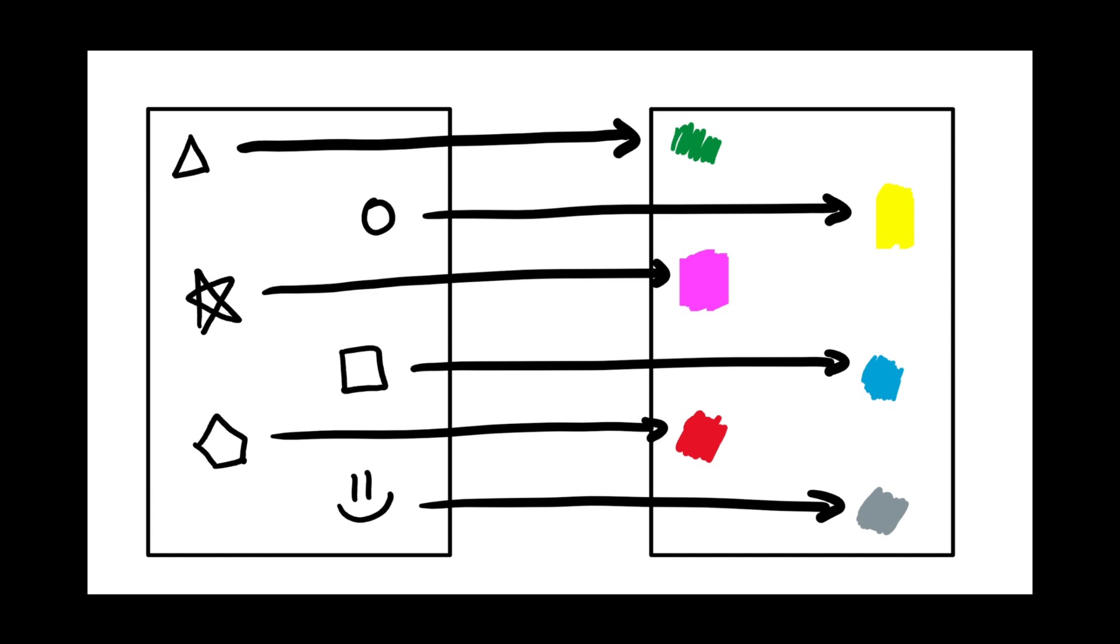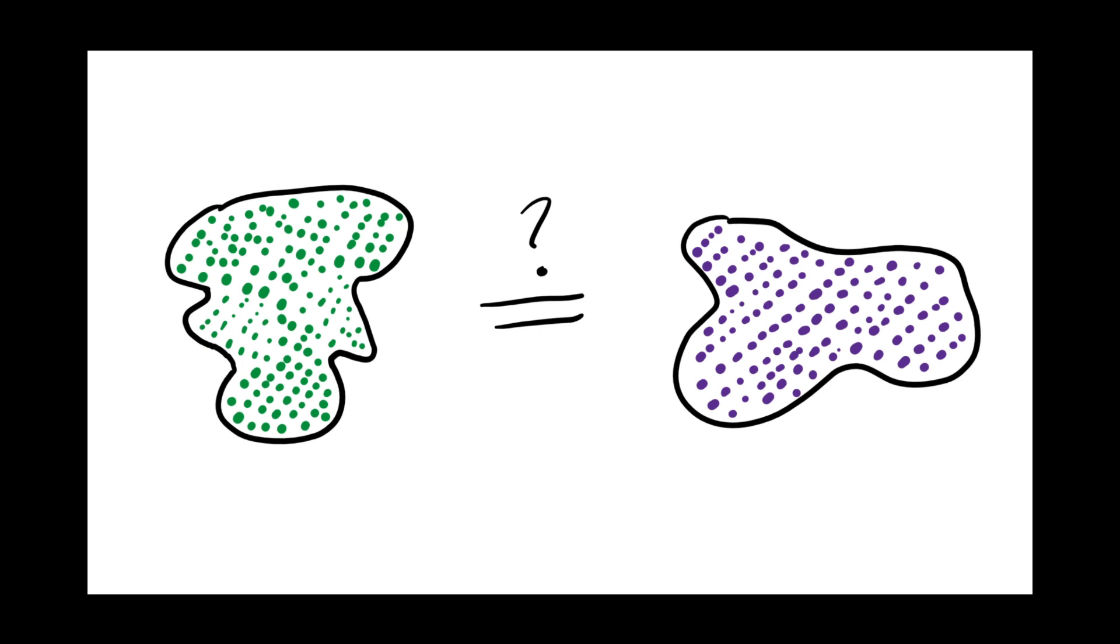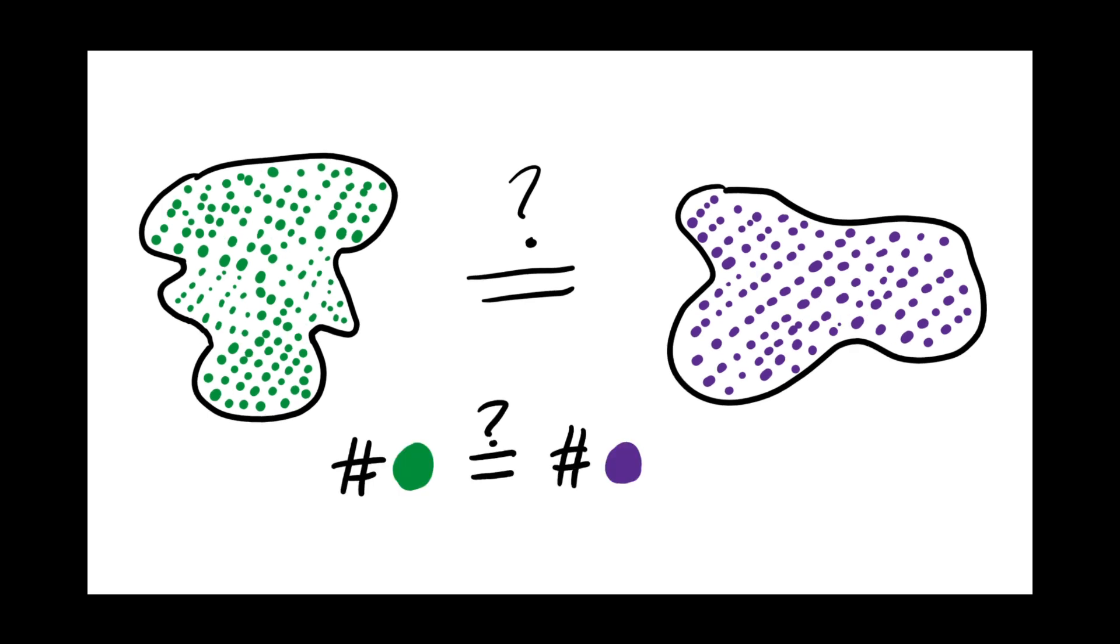So the most basic condition for two mathematical objects to be the same is that we should be able to pair up every member of one set with one and only one member of the other set. The fancy word for this is a bijection. In the case of topological spaces, it means that our first step in checking whether two spaces are the same is to make sure we can pair up all the points in one space with all of the points in the other space.